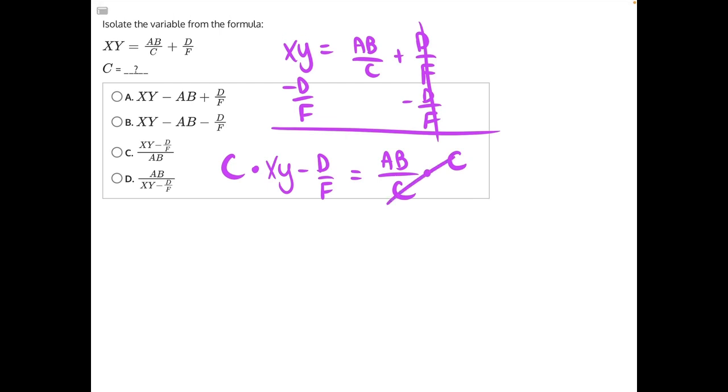These c's will cancel, leaving us with c times xy minus d/f is equal to ab. And now, all of this, this entire set of parentheses, is being multiplied to c.